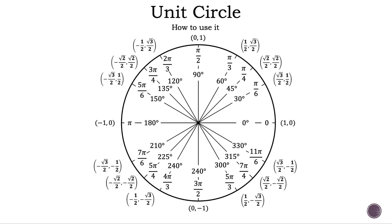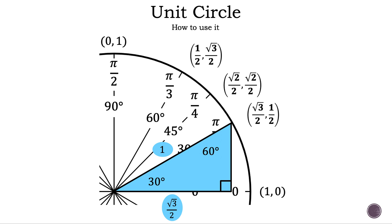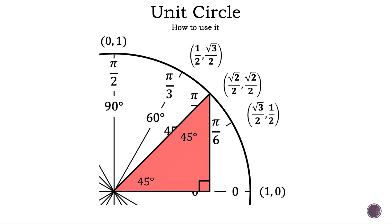Let's bring back our unit circle. We're going to use the 30-60-90 and 45-45-90 right triangles to construct a unit circle. Zooming into the first quadrant: the hypotenuse, or radius, is 1. The side across from 60 degrees is square root of 3 over 2, and the side across from 30 degrees is 1 over 2, leading to the point (√3/2, 1/2). For the 45-45-90 triangle, both legs are square root of 2 over 2, leading to the point (√2/2, √2/2).